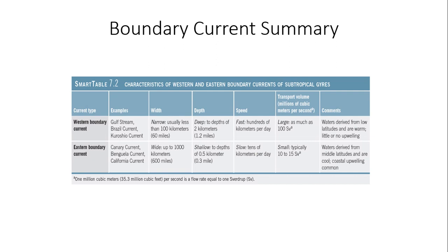Here's the boundary current summary. The western boundary currents include the Gulf Stream and the Kuroshio current in the northern hemisphere. These play a significant role in the development of extratropical cyclones, especially in wintertime on the east coast of the United States where nor'easters tend to form along the boundary between much colder air over the North American continent and the much warmer water over the Gulf Stream. In the southern hemisphere, the Brazilian current is an example of a western boundary current — narrow, fairly deep, very fast, and transporting a lot of water.